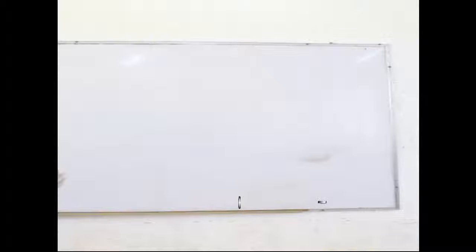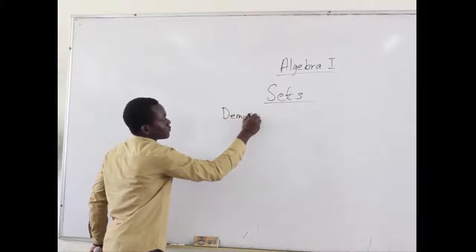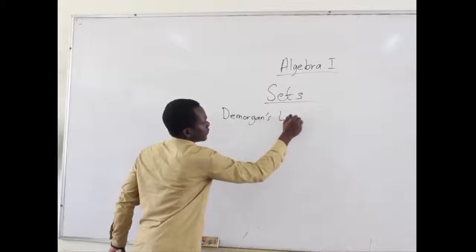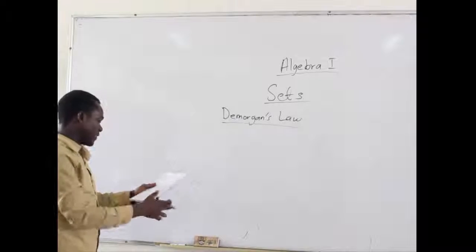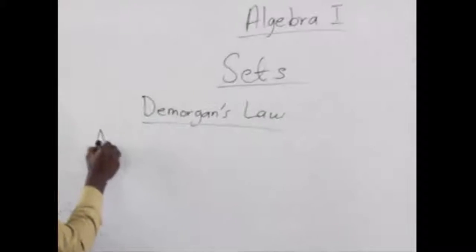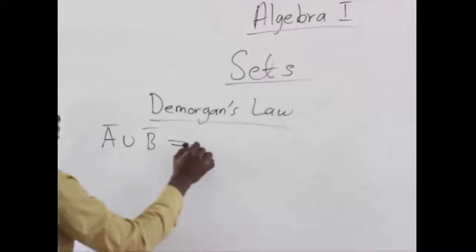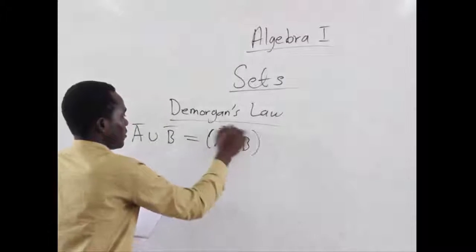The last topic we are talking about today is De Morgan's Law, which we always discuss when we come to sets. The law states operations based on sets. We propose that A complement union B complement equals A intersection B complement.